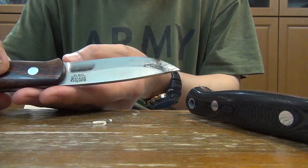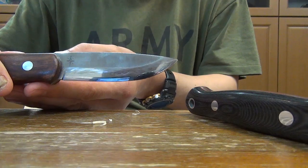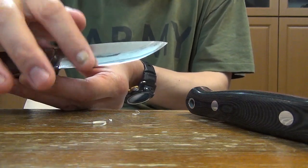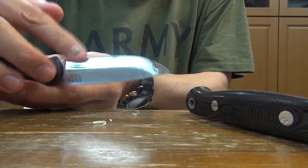Bushcrafter. Different geometry on each side. Steeper convex, higher grind, shallow convex.